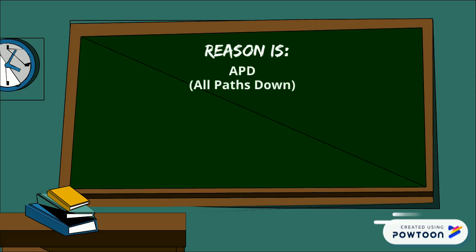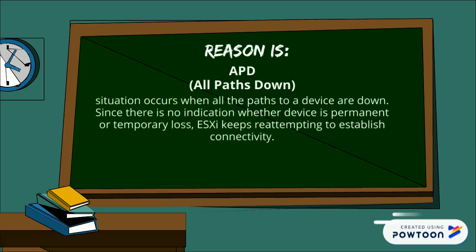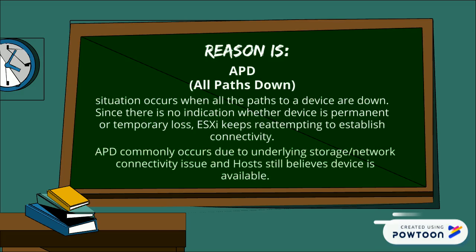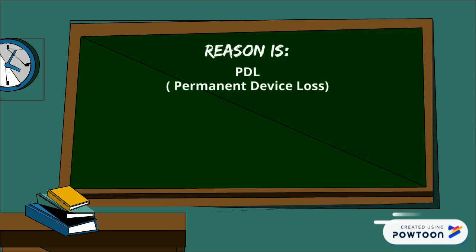Let's understand what APD, or All Path Down, is. An APD situation occurs when all the paths to a device are down. Since there is no indication whether the device is permanently or temporarily lost, ESXi keeps reattempting to establish network connectivity. APD commonly occurs due to underlying storage or network connectivity issues, and the host still believes the device is available.